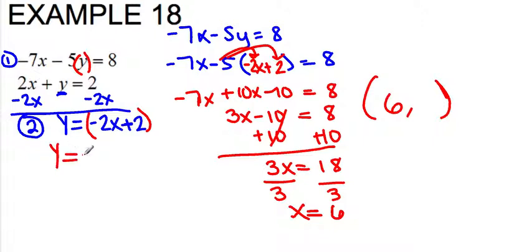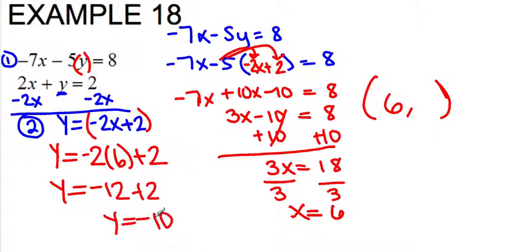So I have y equals negative 2 times 6 plus 2. So y equals negative 12 plus 2, which comes out to negative 10. So my solution is 6, negative 10.